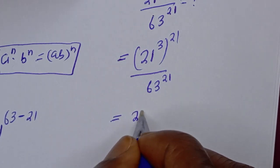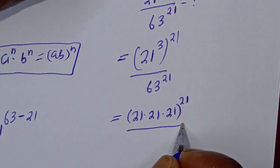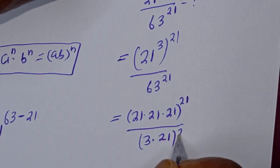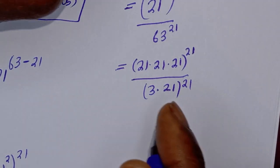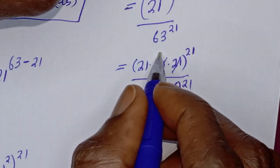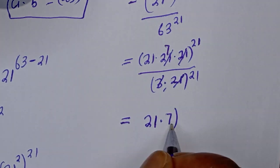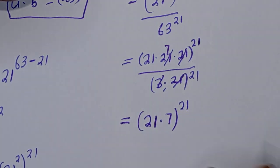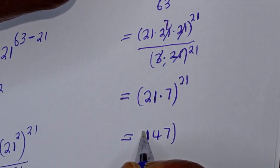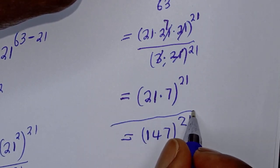This is equal to 21 multiplied by 21 multiplied by 21, to the power of 21, over 63 — which can be written as 3 multiplied by 21 — to the power of 21. This simplifies to 21 multiplied by 7, to the power of 21, giving 147 to the power of 21 as the final answer.